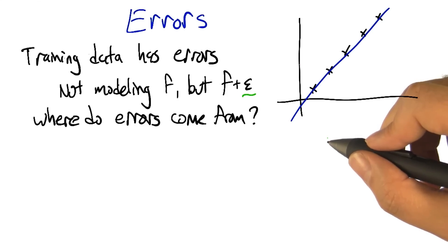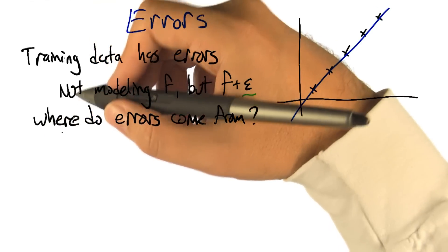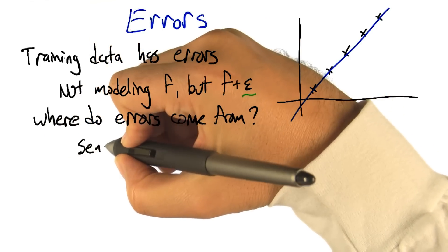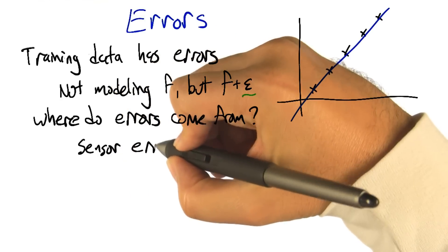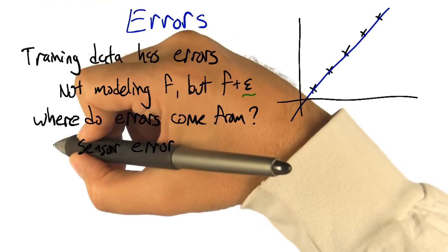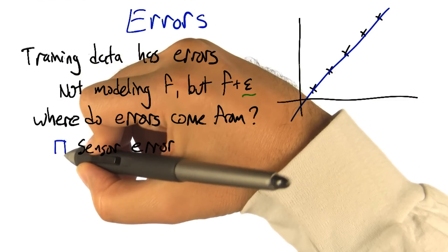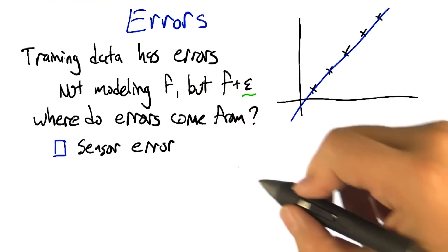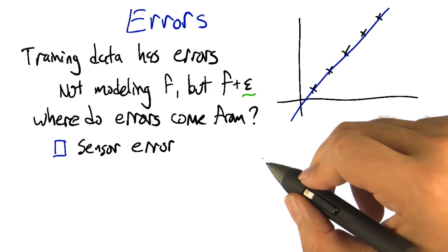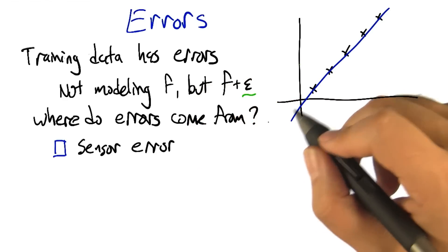So they could come from sensor error, right? Just somehow you're getting inputs and you're getting outputs, and that output's being read by some machine, or by a camera, or by something. And there's just error in the way that you read the data, just the error in the sensors. All right, can you think of other ways?